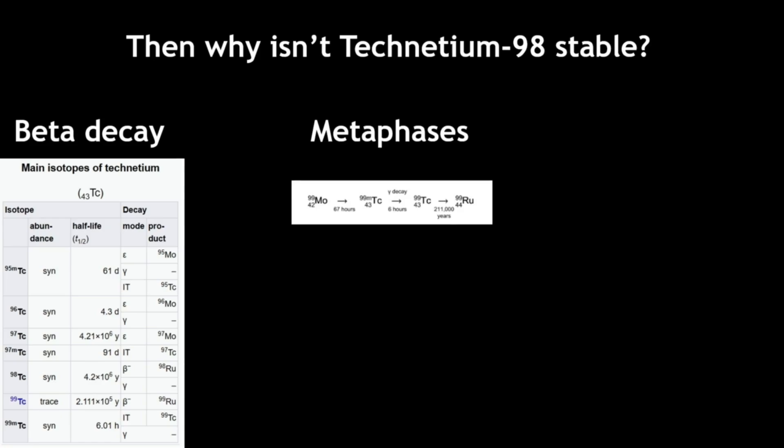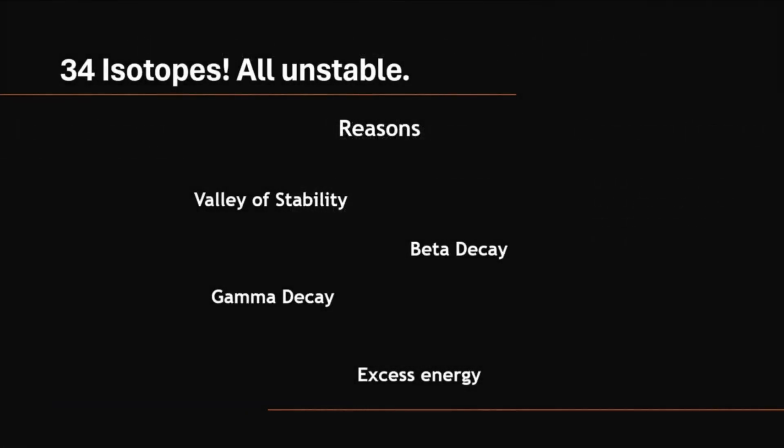One example of why technetium does this is because molybdenum-99 decays into technetium-99m, a metastate of technetium. Then technetium-99m decays into technetium-99 by gamma decay, where excess energy is released. Technetium-99 further decays into ruthenium-99 because the high amount of energy is still unstable.